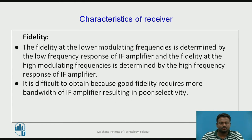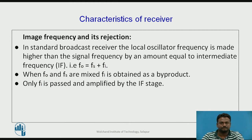Fidelity of the receiver represents the ability of the receiver to reproduce all the modulating signals present in the received signal. Fidelity at low modulating frequencies is determined by the low-frequency response of the IF amplifier, and fidelity at high modulating frequencies is determined by the high-frequency response of the IF amplifier. Good fidelity requires a wider IF amplifier bandwidth, which results in poor selectivity — making it difficult to achieve both simultaneously.